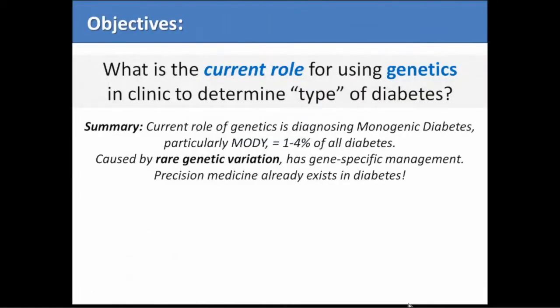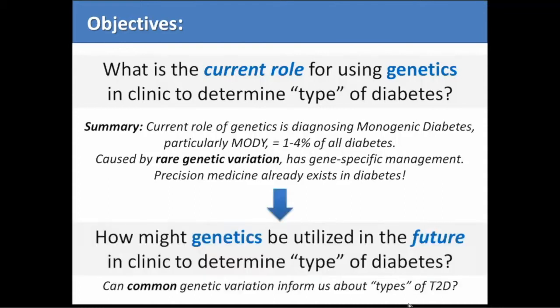So that's where the current state of affairs is for using genetics in the clinic for diabetes: we can diagnose monogenic diabetes — particularly MODY, which is not rare — where there can be gene-specific management with rare genetic variation. Now, how do we move forward to think about type 2 diabetes subtyping? I'm going to switch from rare genetic variation to think about common genetic variation.